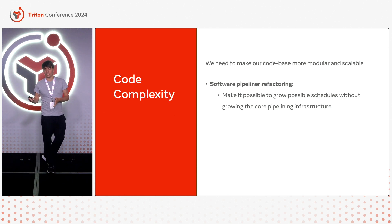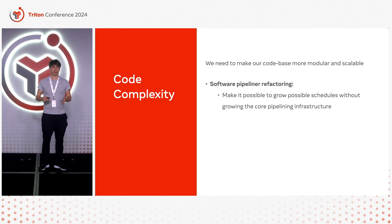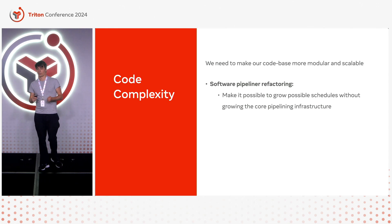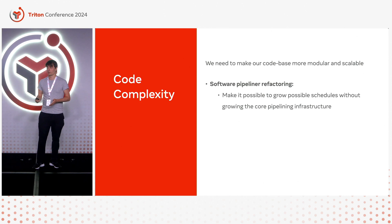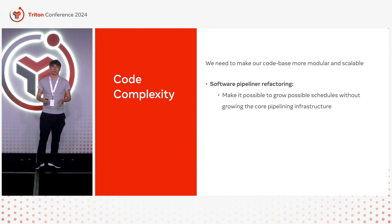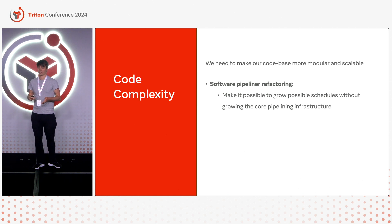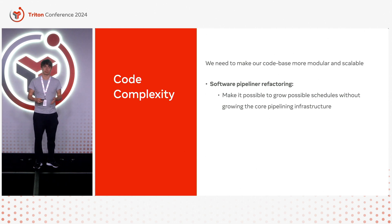Finally, we have a big software pipeliner coming up, which is going to be a collaboration between OpenAI and Meta. The goal is to be able to have more software pipelining schedules without duplicating our entire software pipelining infrastructure. For example, if you want to do FlashAttention 3, you might need a new schedule and might not want to reuse the matrix multiplication one.